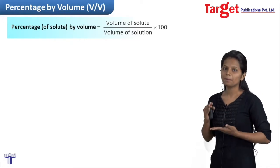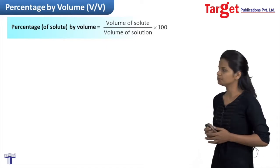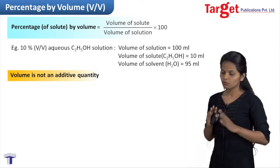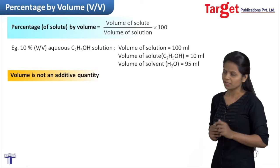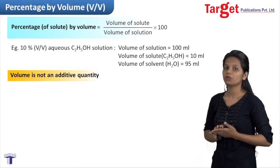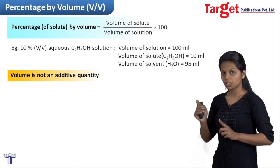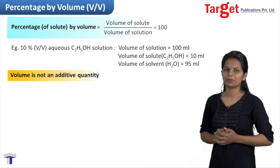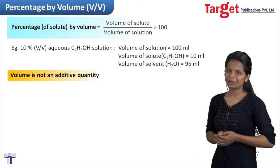Volume of solute and volume of solvent may not necessarily be equal to the volume of solution. For example, a 10% by volume aqueous ethanol solution means the total solution is 100 millilitre, in which ethanol (the solute) is 10 millilitre. The remaining volume of solvent may not equal 90 millilitre — it could be 95 millilitre — so adding the two volumes does not necessarily give the volume of the entire solution. Since volume is a temperature-dependent quantity, percentage by volume is also a temperature-dependent quantity.